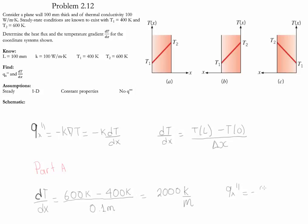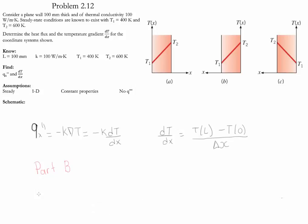Let's continue with Part B. The gradient in this case: the temperature at L is going to be 400 Kelvin and the temperature at 0 is going to be 600 Kelvin.